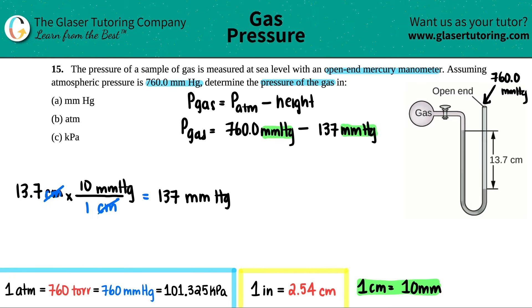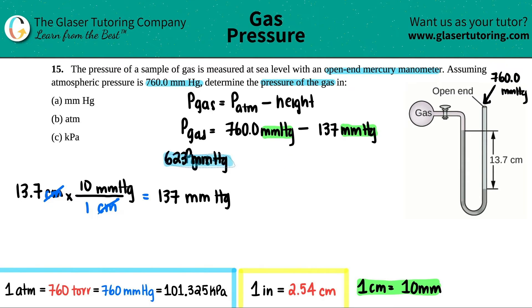760.0 minus 137 equals 623. So the pressure of the gas is 623 millimeters of mercury — that's the answer for part (a).